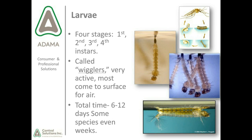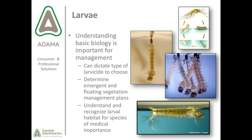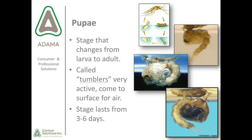In the larval stage there are four instars — first, second, third, and fourth. They are called wigglers, are very active, and most come to the surface for air. Total time as larvae is generally 6 to 12 days, though some species can take weeks. Understanding basic biology is critical for management — it can dictate the type of larvicide chosen, determine vegetation management plans, and help identify larval habitats for species of medical importance.